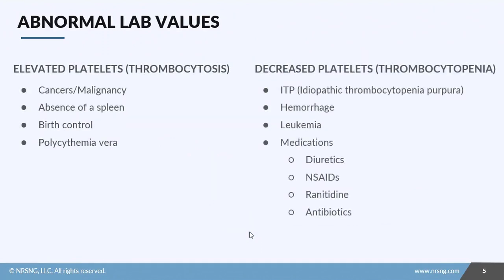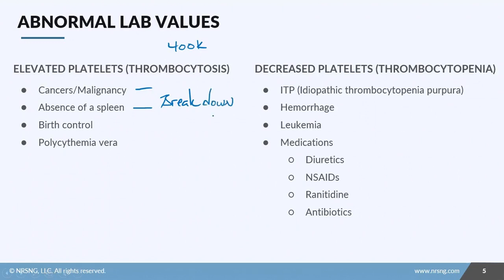What happens if we have high or low values of platelets? With elevated platelets, you have a condition called thrombocytosis — that's when platelets are greater than 400,000 cells per microliter. Conditions that trigger this include cancer or malignancy, the absence of a spleen (since the spleen breaks down old or damaged platelets), and certain types of birth control, which can increase platelet counts.